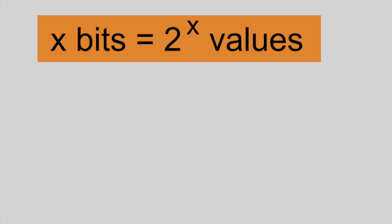You may have noticed a relationship between the number of bits and the number of values that can be represented. As a general rule, x number of bits can represent a total of 2 to the x different values.